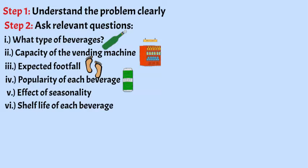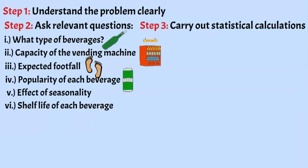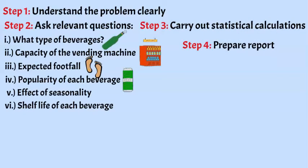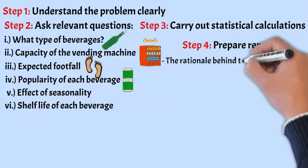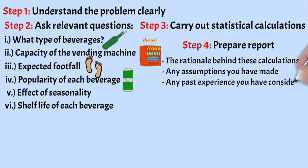Now, based on all the information that you have collected, based on all the data that you have collected in step number two, carry out your statistical calculations. And then prepare your report for the client. Here, you'll have to explain the rationale behind these calculations, any assumptions that you might have made, any past experiences that you have considered, cost considerations, etc. What's important here is to keep monitoring the performance of the machines and make any adjustments as required.